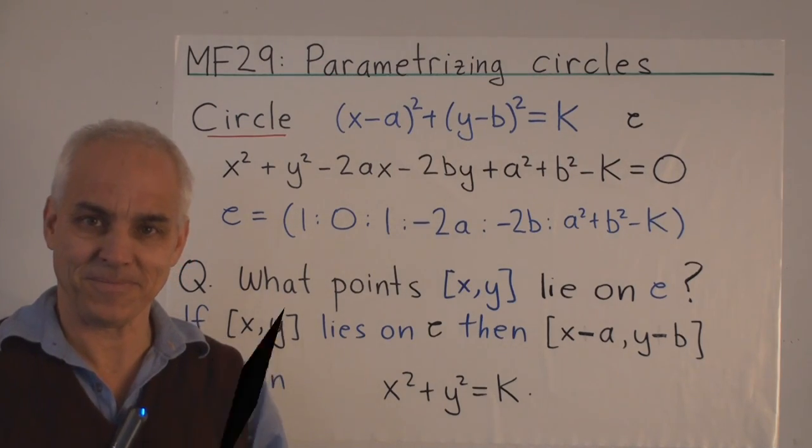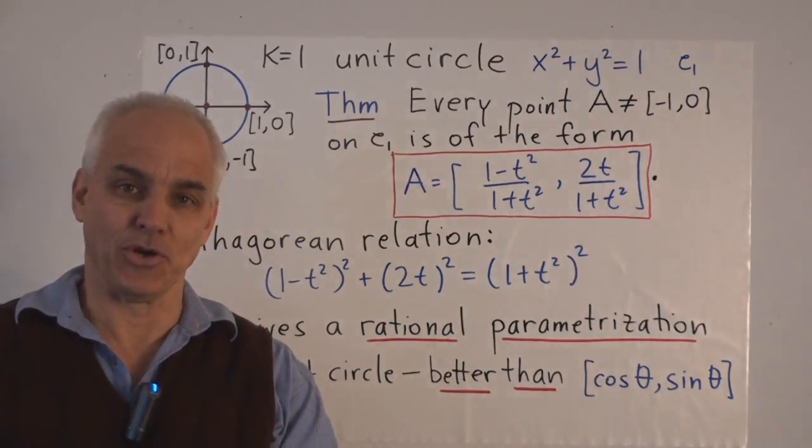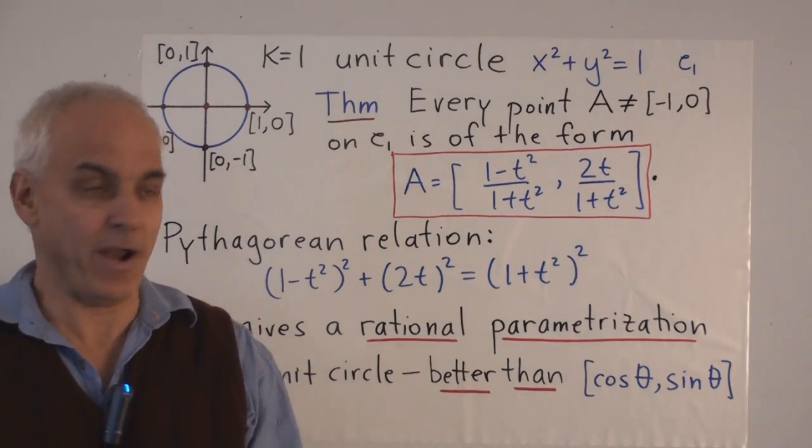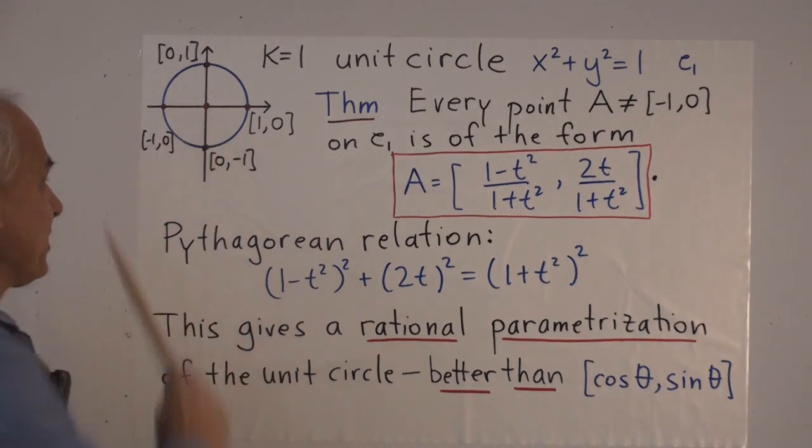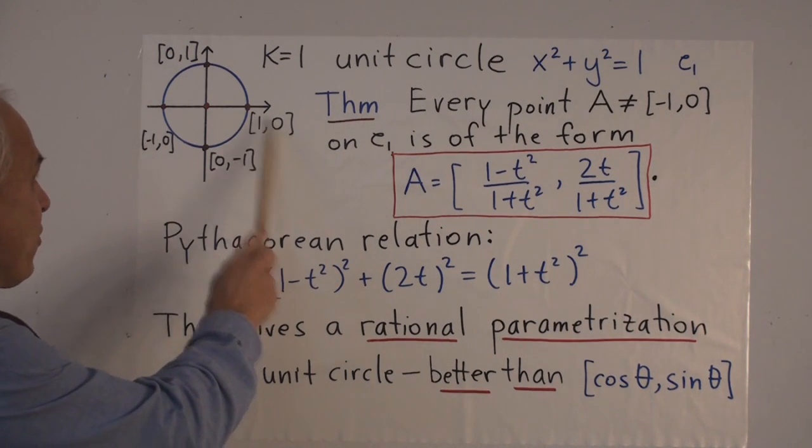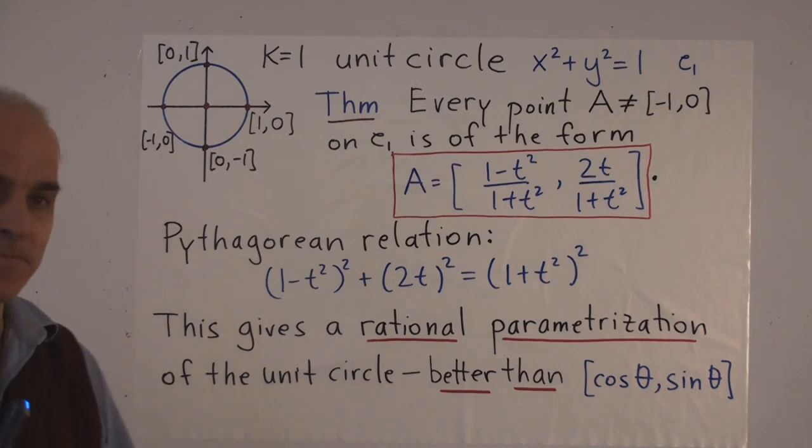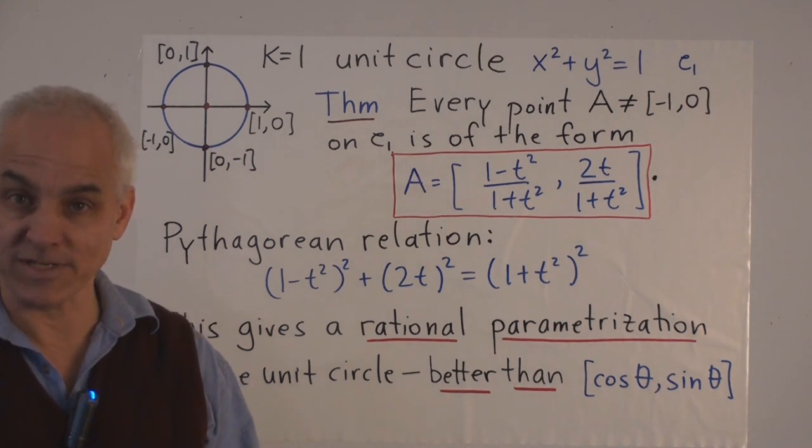So let's have a look at the simplest possible circle: the unit circle with equation x² + y² = 1. There it is there, with center (0,0), and it goes through the points (1,0), (0,1), (-1,0), and (0,-1). But it actually goes through a lot of other points as well. How do we get those other points?